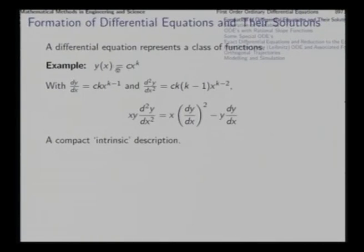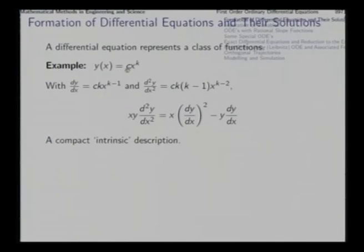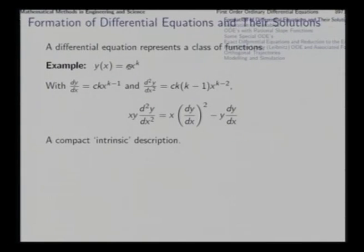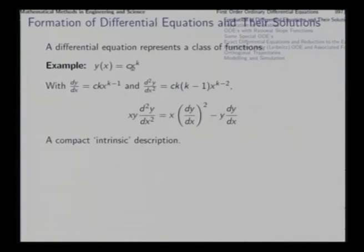For that, we differentiate and get the first derivative. If you notice between y and dy/dx, you can immediately see that the parameter c can be immediately removed. You have two equations: y equal to this and dy/dx equal to this. Between two equations you can eliminate one unknown, say c. For that, you divide dy/dx by y, and in the division on the right side c will get eliminated.